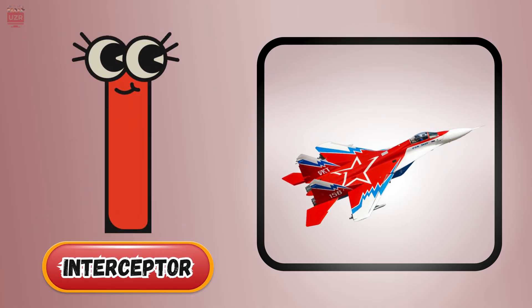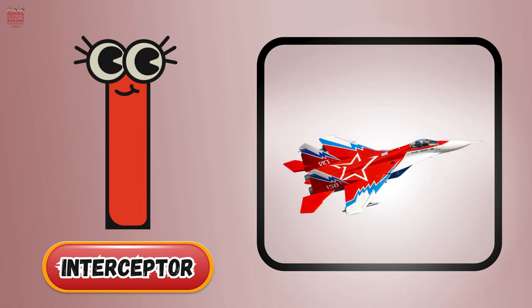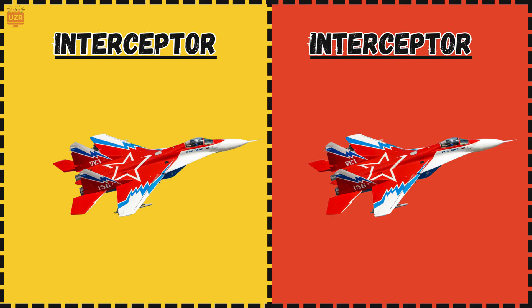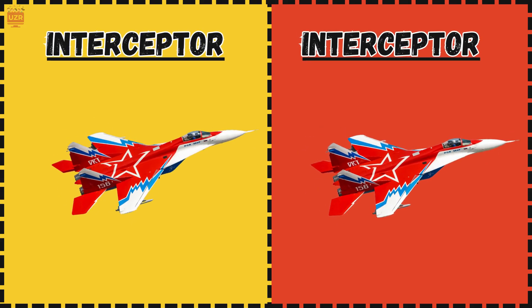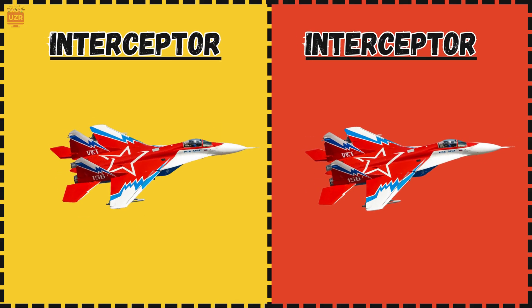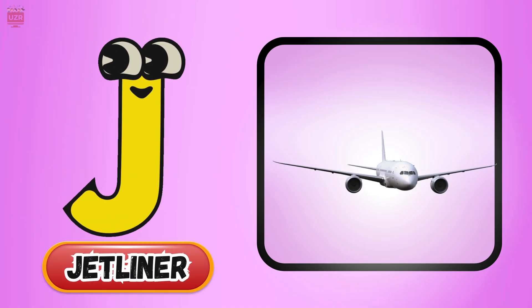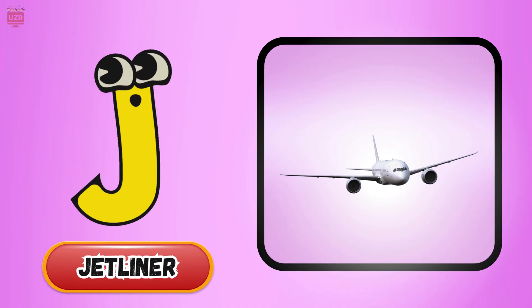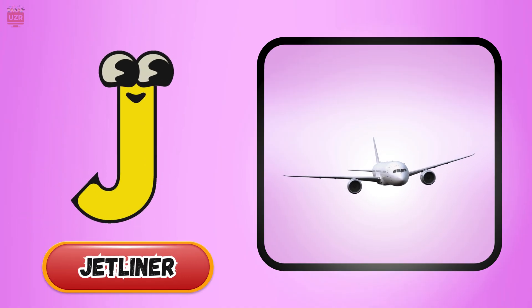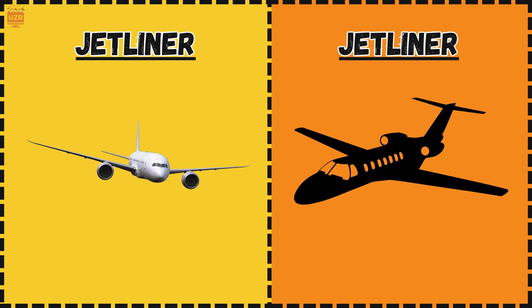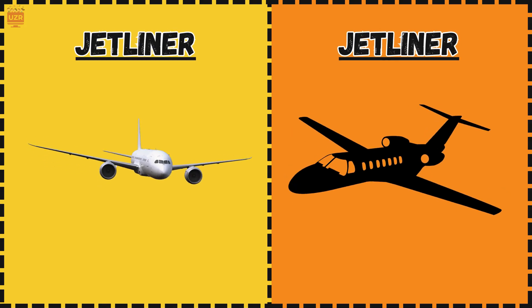I is for interceptor, chasing fast up in the air. J is for jetliner, flying people everywhere.